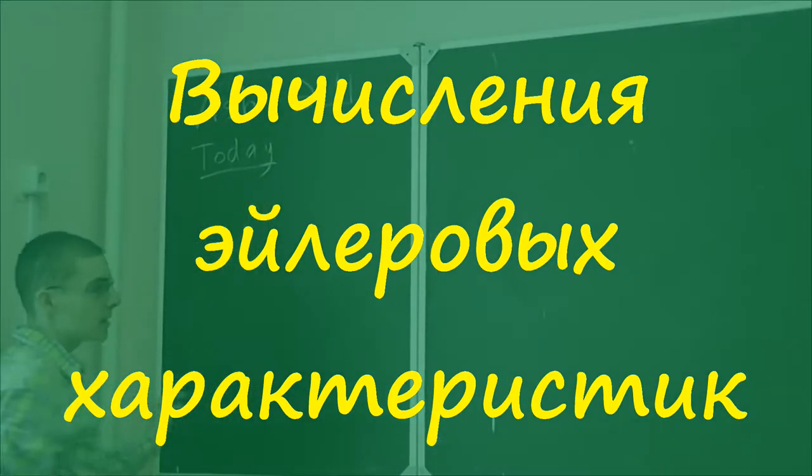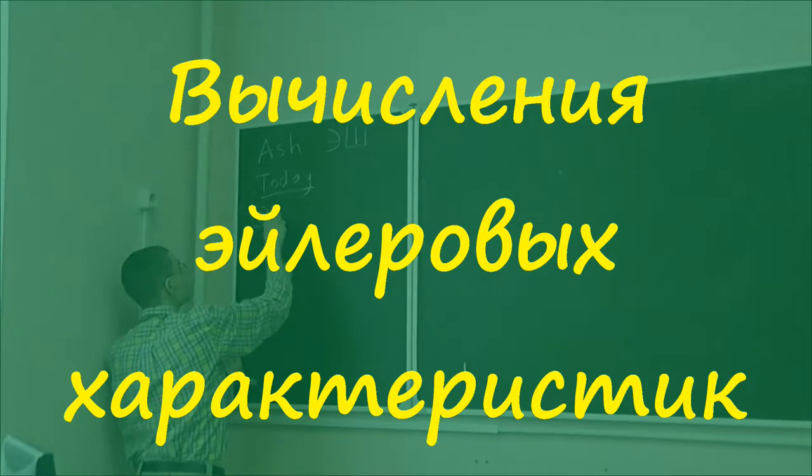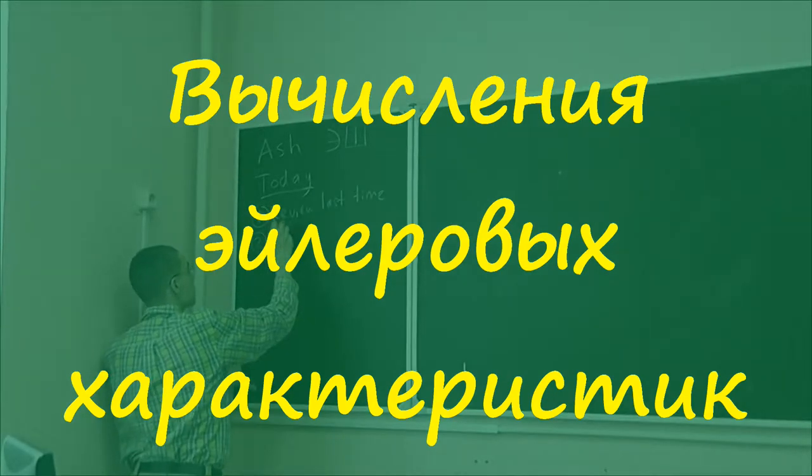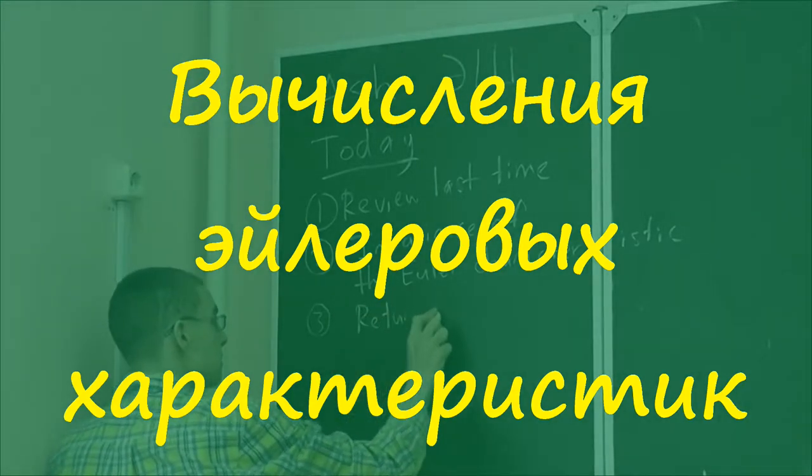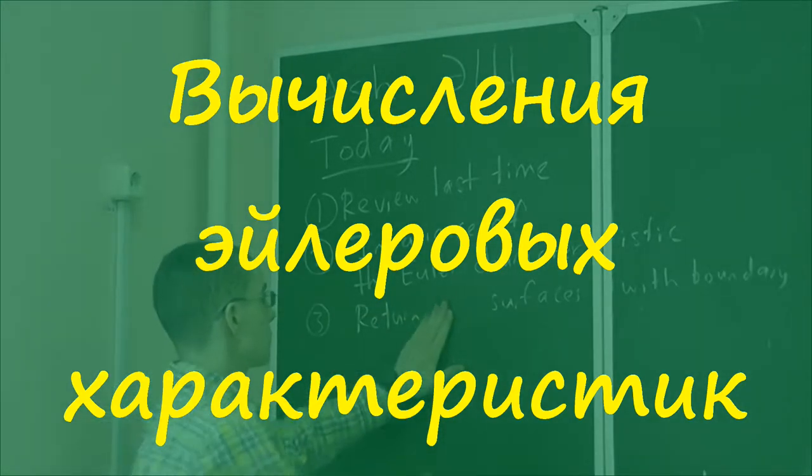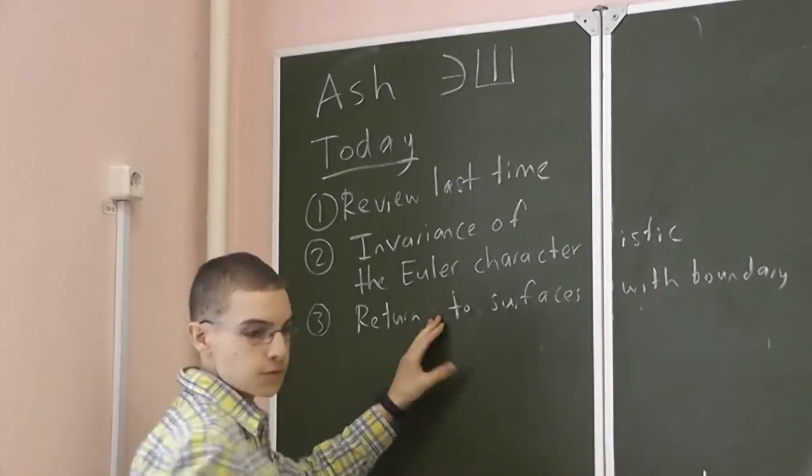Let's continue our exposition of the Euler characteristics. So first let's review, look at the ingredients, and then we'll return to surfaces with boundaries. Surfaces with boundaries.